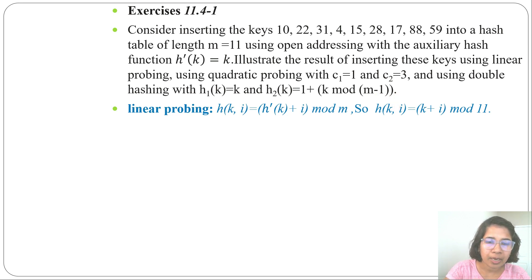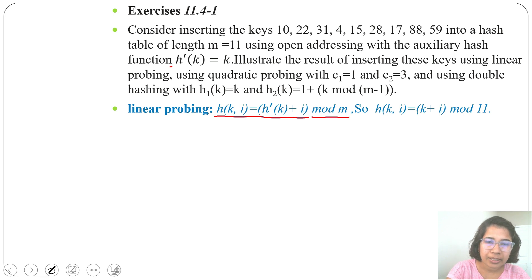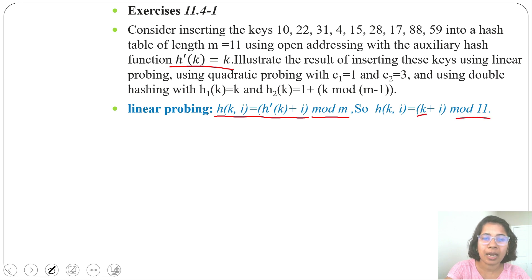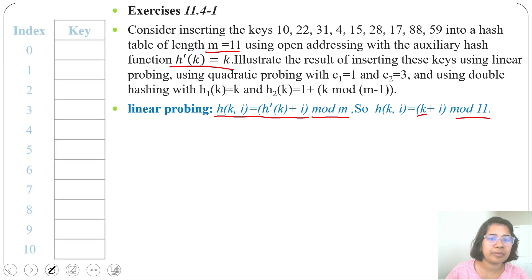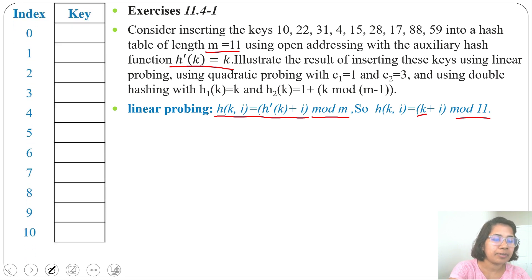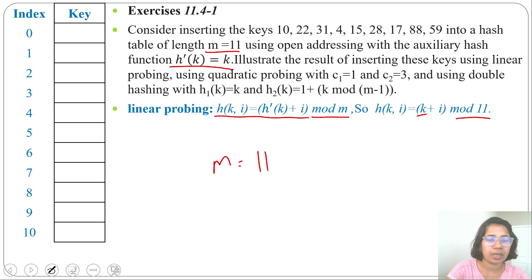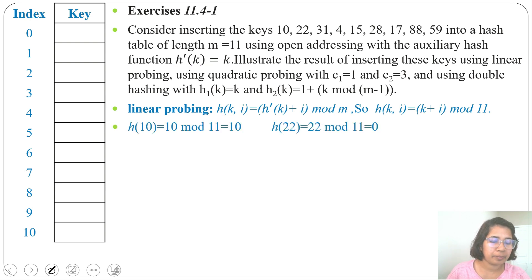First I will solve using linear probing. In linear probing the hash function is h(k, i) = h'(k) + i mod m. Here h'(k) is given as k, so h(k, i) = k + i mod 11, since m equals 11. We will create a hash table with index from 0 to 10, since index starts from 0 till m minus 1.